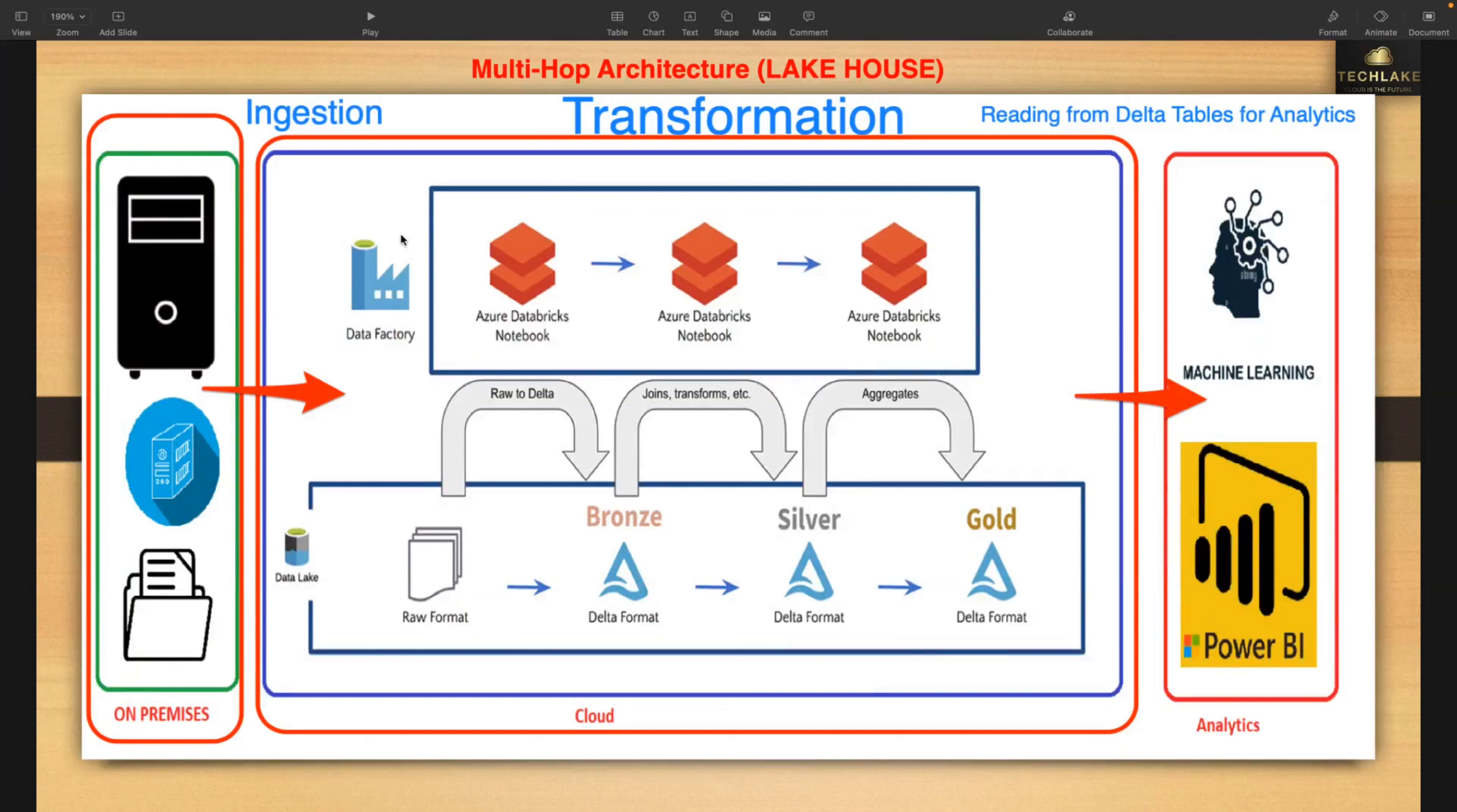Ingestion is a very key important thing in any data migration from on-premises to cloud. How we will fine-tune, what are the best approaches, what are the things which we can follow to get better performance when you are migrating data from on-premises to cloud. That may be historical data migration or incremental data migration. That may be databases or files.